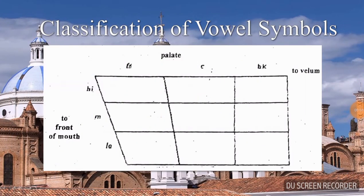Classification of vowel symbols. For convenience of reference, linguists have developed a quadrant that has nine sections of tongue movement. We use three parts of the mouth to pronounce vowels: the front of the mouth, the palate, and the velum. At the top of the quadrant, we have three different sections — front, center, and back — and vertically: high, mid, and low.